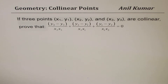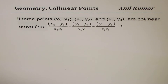You can pause the video, copy the questions, and then look into my solutions. The first question is: if three points (x1, y1), (x2, y2), and (x3, y3) are collinear, prove that (y2 - y3)/(x2·x3) + (y3 - y1)/(x3·x1) + (y1 - y2)/(x1·x2) = 0.